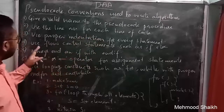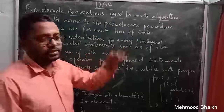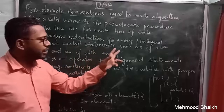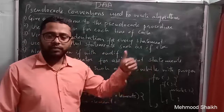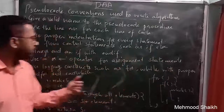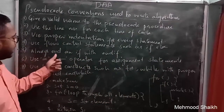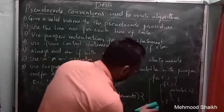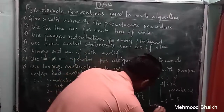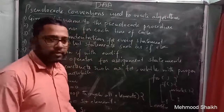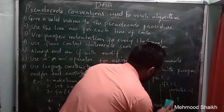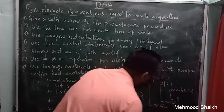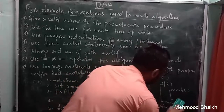The next convention is: use flow control statements such as if-else. While writing the pseudocode, you need to use control statements like if, else, and if-else ladder. Next is: always end an if with 'end if'. So instead of using curly brackets, you use 'end for', 'end if', and 'end while' in place of the closing flower bracket.